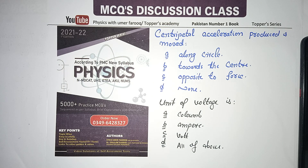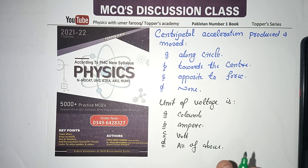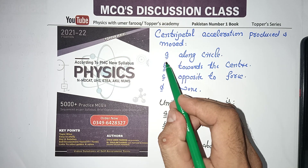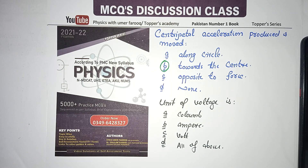Next MCQ: Centripetal acceleration is produced along a circle toward the center. Centripetal acceleration is directed toward the center of the circle.